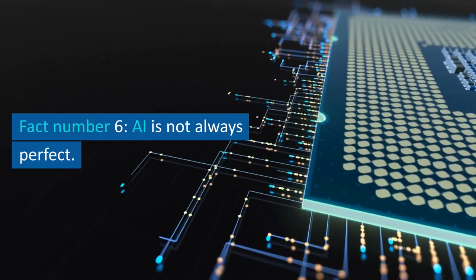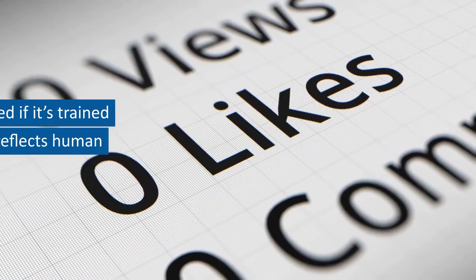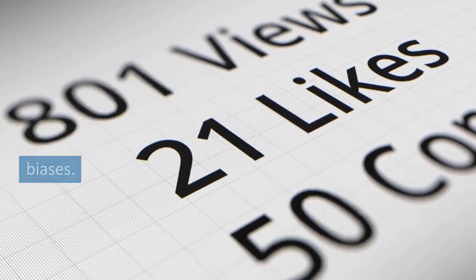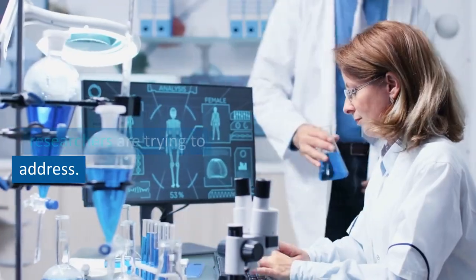Fact number 6. AI is not always perfect. It can be biased if it's trained on data that reflects human biases. This is something that researchers are trying to address.